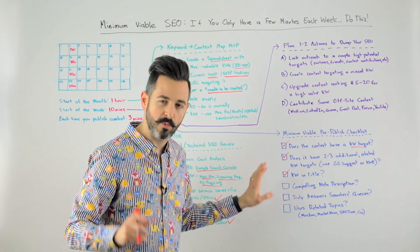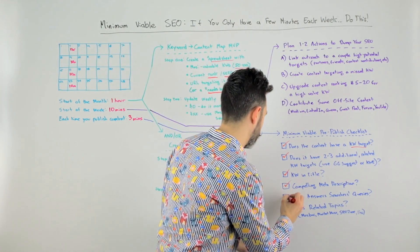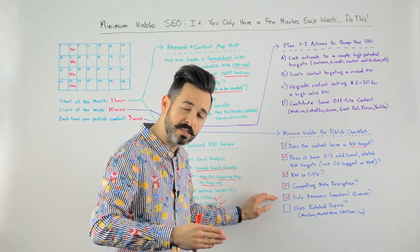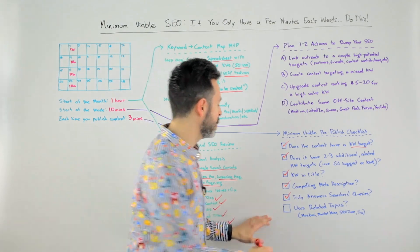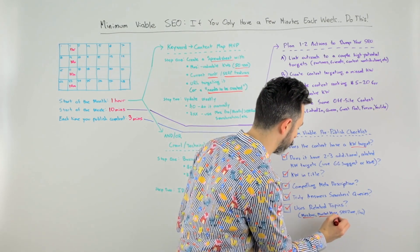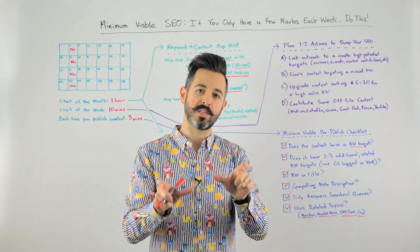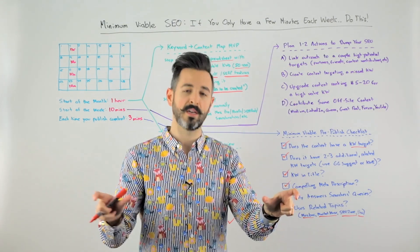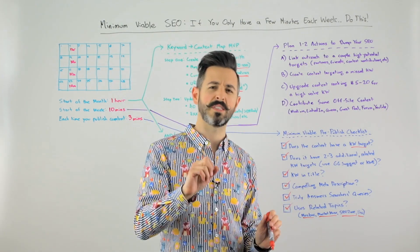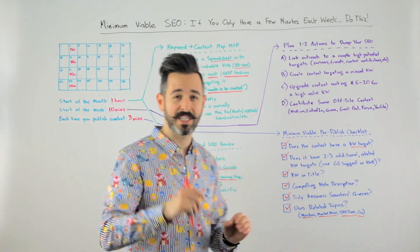Is that main keyword in the title? Do you have a compelling meta description? Is your content doing a good job of truly answering the searcher's query — are you serving up the content they need? And have you used related topics? You can get those from places like the Moz Bar, Market Muse, SEO Zone, or Moz Pro. Related topics are essentially the words and phrases you should also be using in addition to your keyword to indicate to the search engines that this is really about this topic. We've seen some nice bumps from that. You're doing this every time you publish content, and it only takes three minutes.